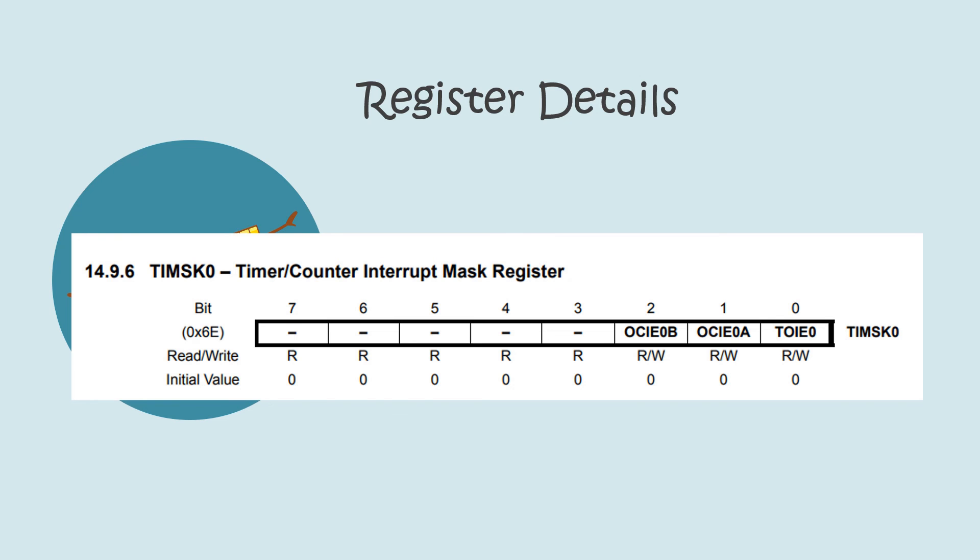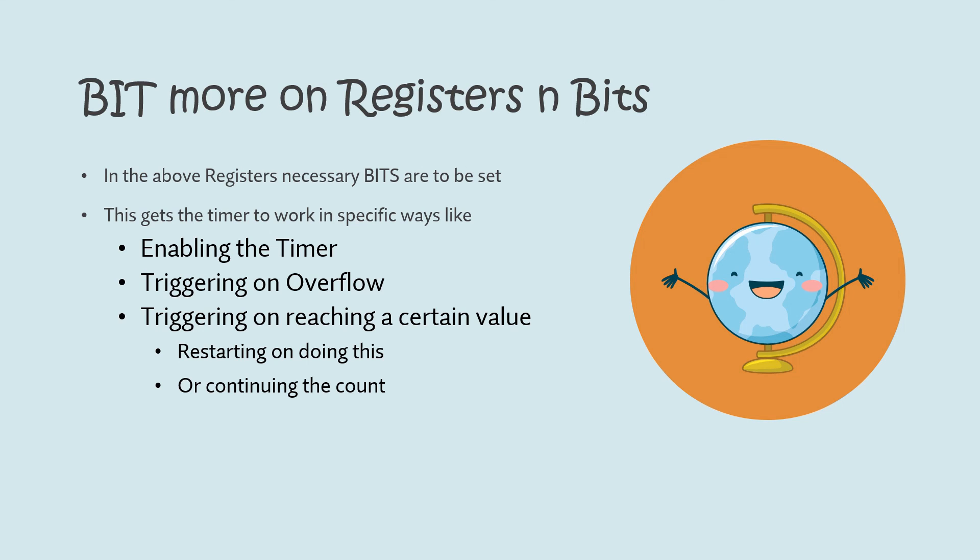To summarize: the timers are associated with specific registers and in these registers there are specific bits which need to be set to certain values. By setting these values, we get the timer to behave in specific ways — enabling the timer itself, getting the timer to trigger an interrupt when it reaches the maximum value, triggering the timer when it reaches a certain intermediate value, and on reaching this value the timer can be configured either to restart and set back to zero, or to continue the count. Thank you, that's all for this video and I'll have one more video covering a practical example.